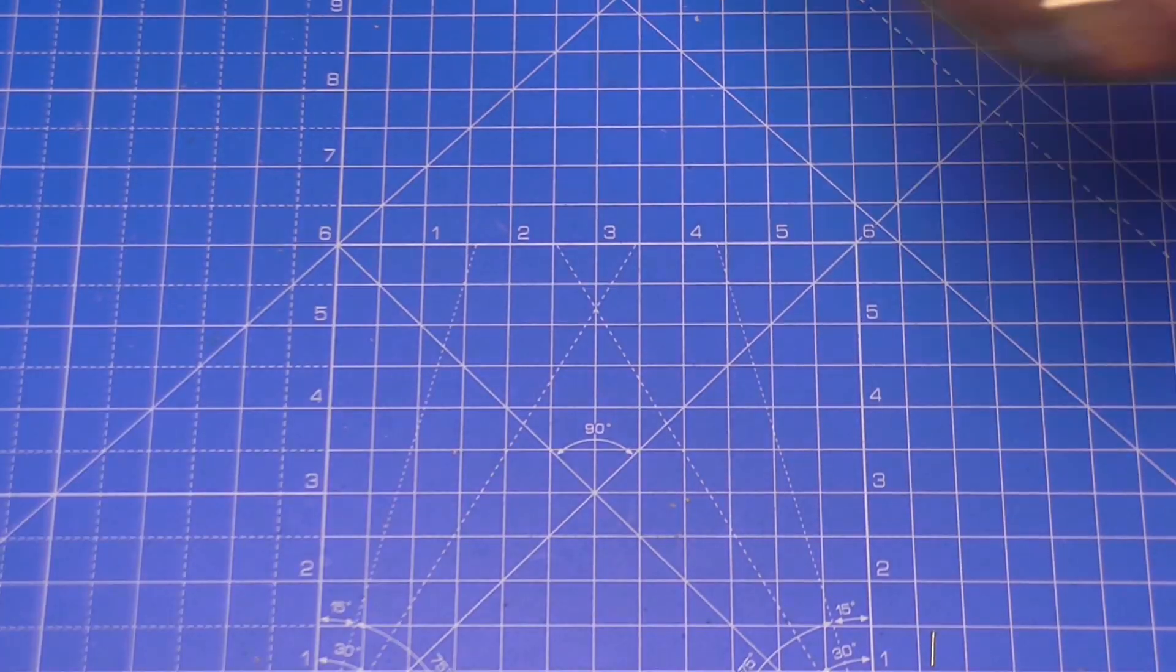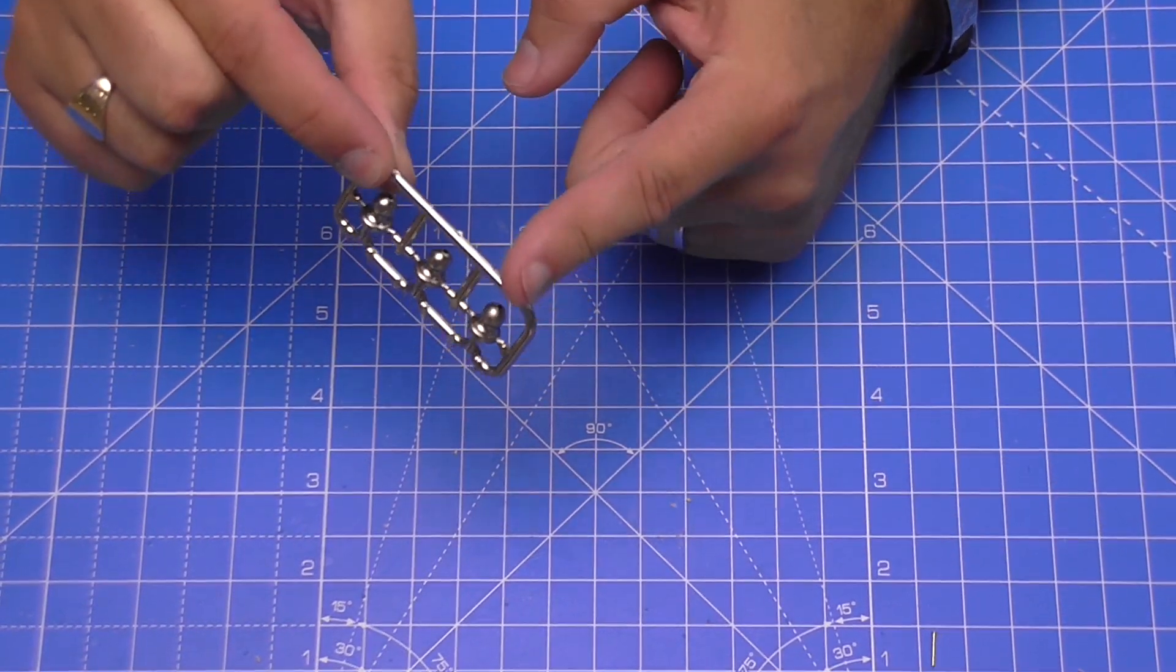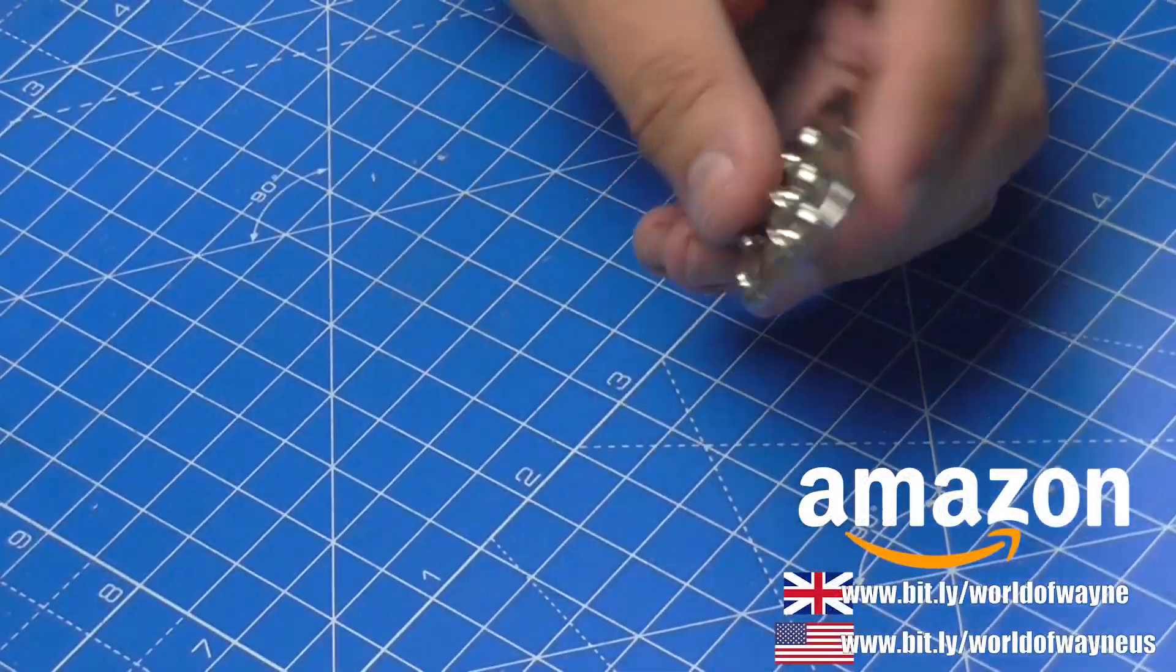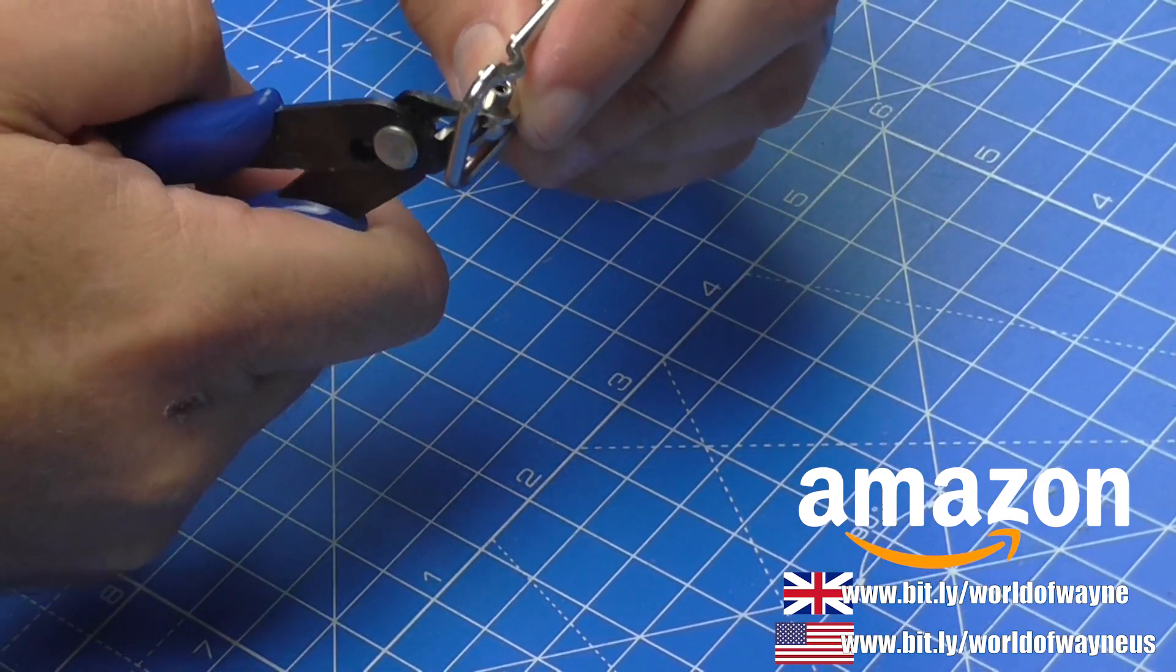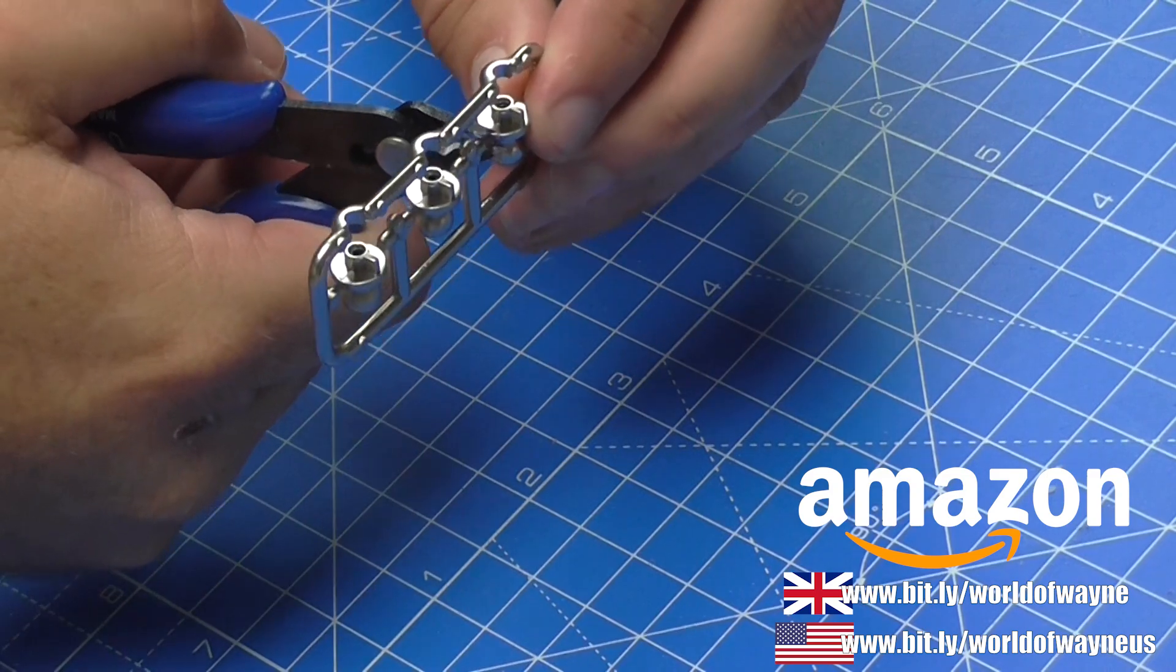This is going to be a nice quick video, so without further ado let's get cracking. The first thing to note is that the ball joints here are all on a sprue, so we're going to need to cut all of these off. I've got my sprue cutters here.